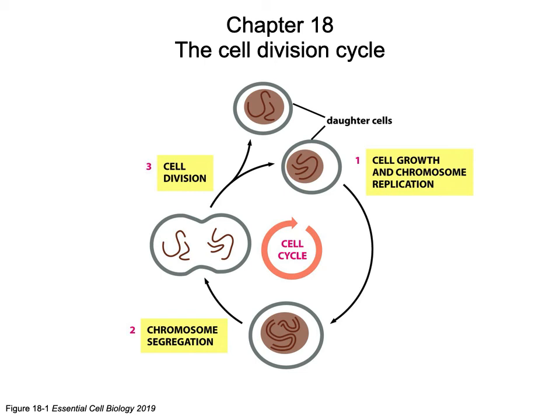If we simplify the process of cell division, our first step is growth. We also need to replicate the chromosomes — the DNA needs to be copied. The next step is to take those chromosomes, segregate and separate them, which begins in the process of mitosis. Then we have cytokinesis, where the cytoplasm is divided, leading to our third step: true cell division, where we have our two daughter cells arising.